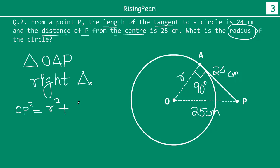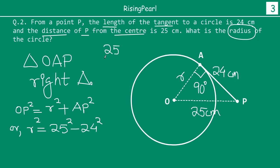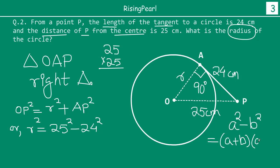So R² equals 25² minus 24². Instead of computing these separately, we use the algebraic identity a² minus b² equals (a+b)(a-b). So R² equals (25+24)(25-24), which equals 49 times 1, which equals 49. Taking square root of both sides, R equals plus or minus 7.